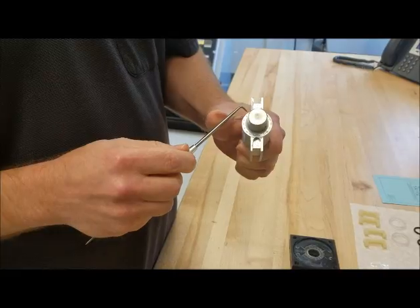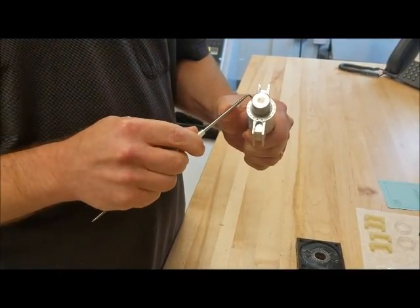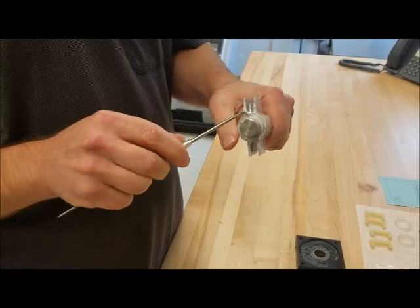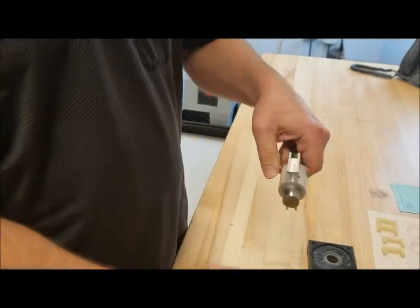And then the washers on the end need to be very careful, but you need to pull them off. So what you want to do is make sure you take these off and change them out when you do the rest of the seals.